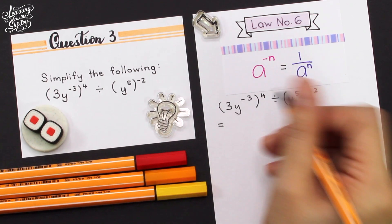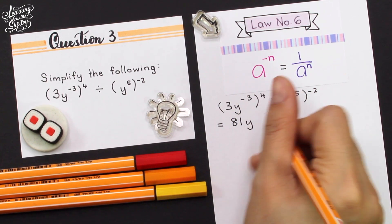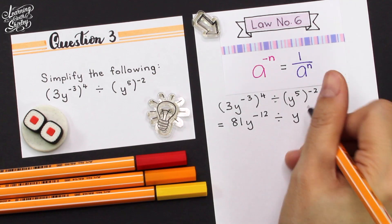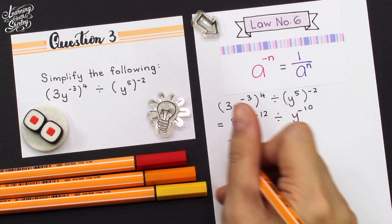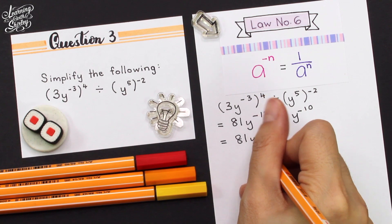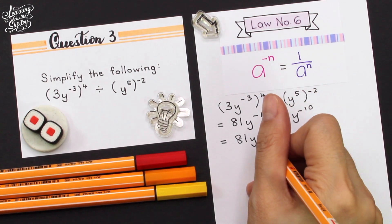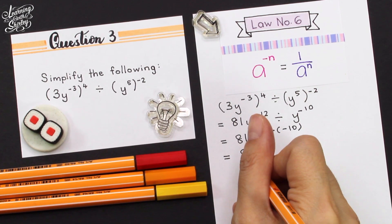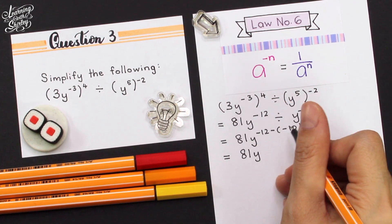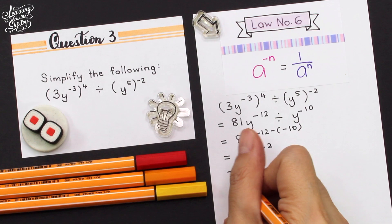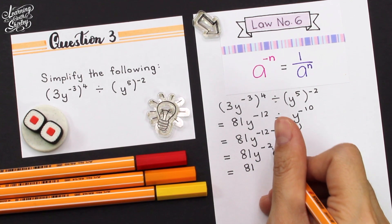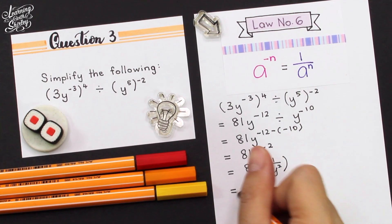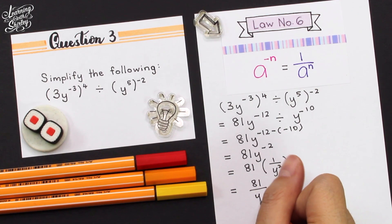So 3 to the power of 4 is 81, and y: negative 3 times 4 is negative 12, divided by y: 5 times negative 2 is negative 10. So equals 81y. Because of divide, we minus the indices: negative 12 minus negative 10, so negative 12 plus 10 is negative 2. So y to the power of negative 2 becomes 1 over y squared. Therefore the final answer is 81 over y squared.